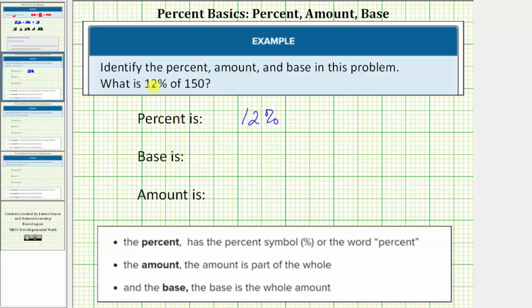Because the question is what is 12% of 150, we're looking for part of 150, which means 150 is the whole amount or the base, and the amount, which is part of the whole, is the unknown.